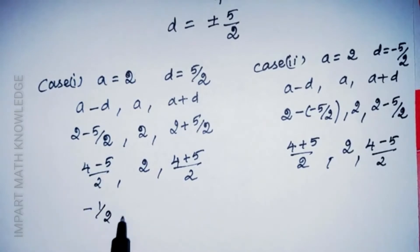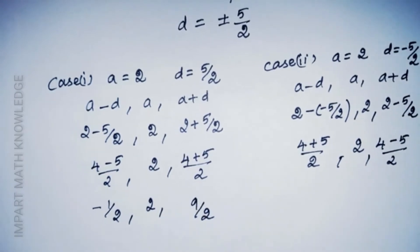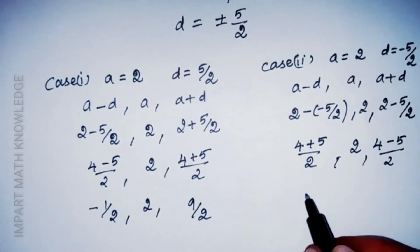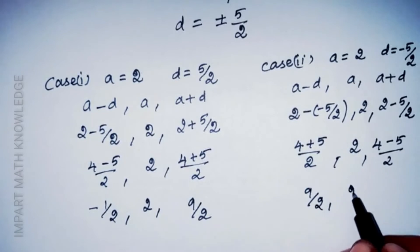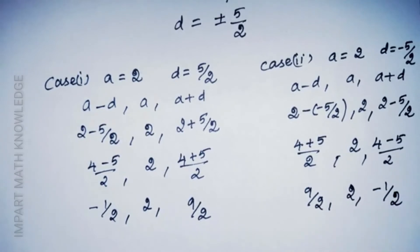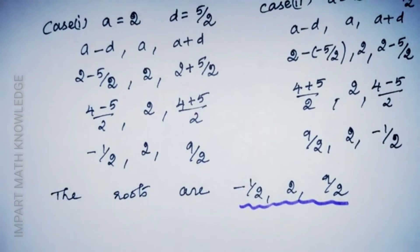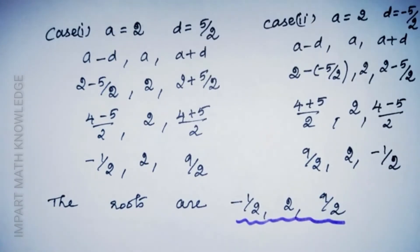The roots are: a-d = 2 - 5/2 = -1/2, a = 2, and a+d = 2 + 5/2 = 9/2. Both cases give the same set of roots. So the roots are -1/2, 2, and 9/2. For a cubic equation with roots in AP, assume a-d, a, a+d, then find a and d using the sum and product of roots.